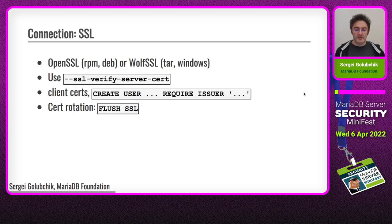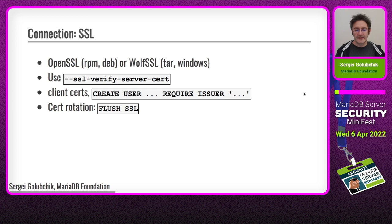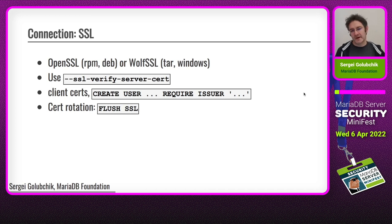This can also work the other way around. There is a way for the server to verify the client identity by using a REQUIRE clause in CREATE USER, ALTER USER, or GRANT. For example, in a large organization that can issue its own SSL certificates, the server can use CREATE USER REQUIRE ISSUER. This way, only clients with certificates issued by that organization's certificate authority will be able to connect to the MariaDB server.